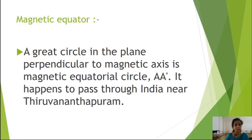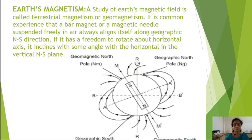The next parameter is the magnetic equator. A great circle in the plane perpendicular to the magnetic axis is the magnetic equatorial circle, denoted A-A dash. It happens to pass through India near Tiruvananthapuram. In the diagram, this great circle A-A dash is called the magnetic equator, and this is the second parameter of earth magnetism.